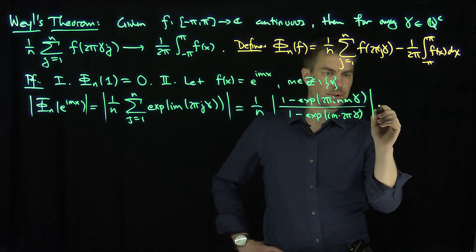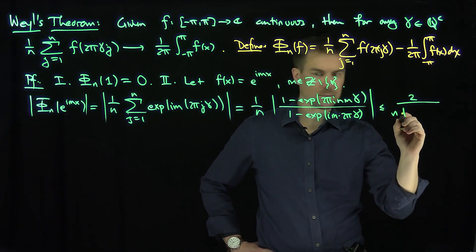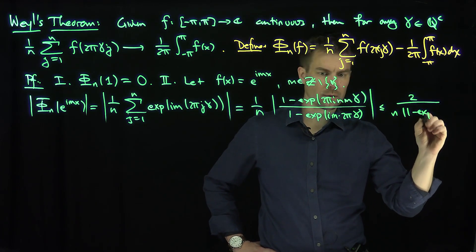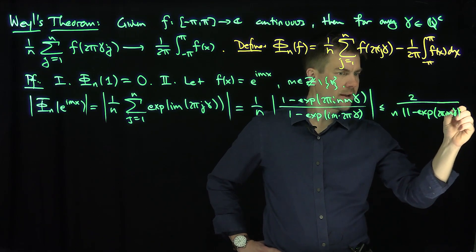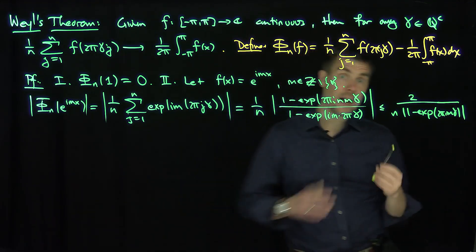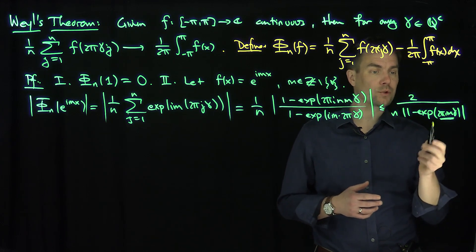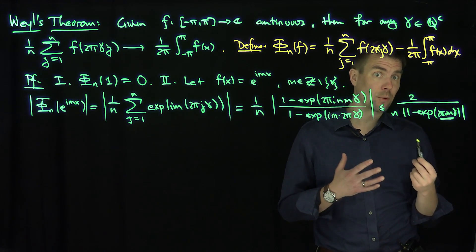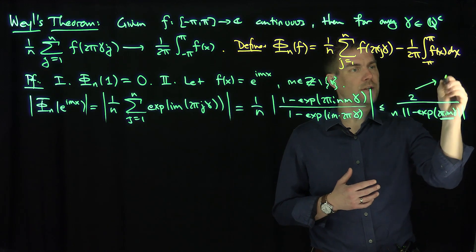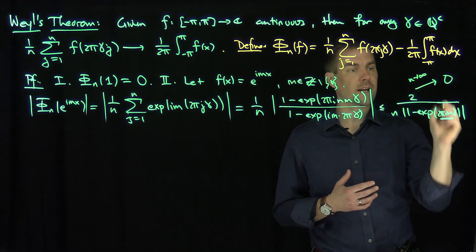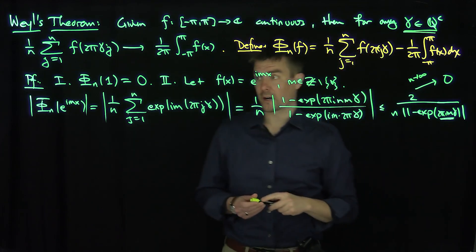And now, of course, the top is bounded by 2, so this is less than or equal to 2 over n times this expression, 1 minus the exponential of 2πimγ. And now the whole point is that since γ is an irrational number, this e to the 2πimγ can never be equal to a multiple of 2π, an integer multiple of 2π. So this denominator over here is bounded, which shows me as n goes to infinity, these terms go to zero, n tends to infinity, and that's where I'm really using the fact that this γ is irrational in this calculation over here.